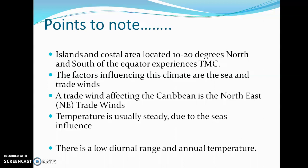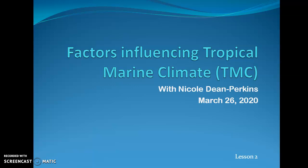Islands and coastal areas located between 10 and 20 degrees north and south of the equator experience this type of climate. The main factors influencing it are the sea and trade winds, though other factors like latitude and ocean currents also play a role. The northeast trade winds affect the Caribbean specifically, and temperature is usually steady due to the sea's influence. Diurnal range is low and annual temperature variation is also low.